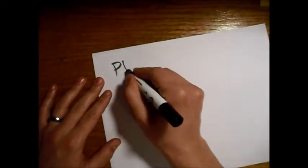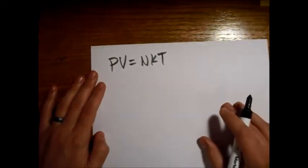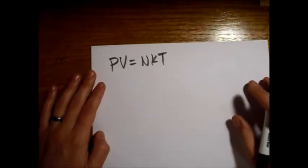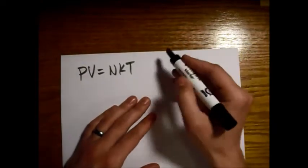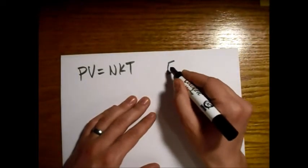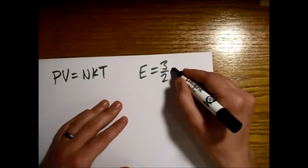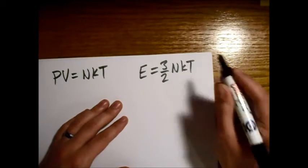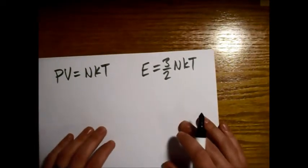So now we're going to look at getting the ideal gas equation, PV equals nkT, from a quantum mechanical perspective. We're still going to use the internal energy of an ideal gas equals three halves nkT from the equipartition theorem.